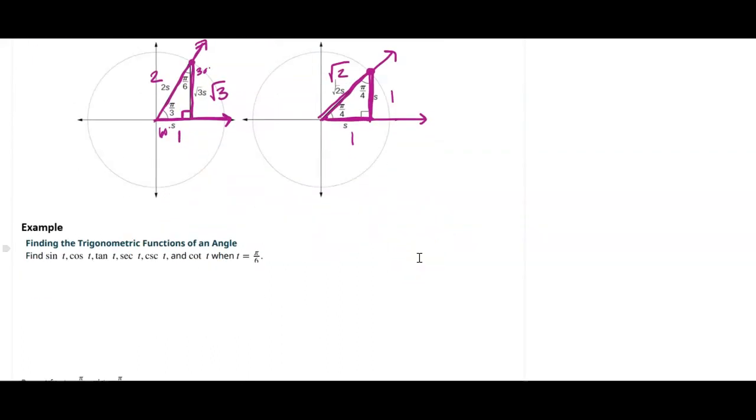So if I want to find the six trig ratios for T equals pi over 6, well, in this case, that's pi over 3. So let's draw a pi over 6. So I would have my initial side, my pi over 6 side, and I would drop this down like so.